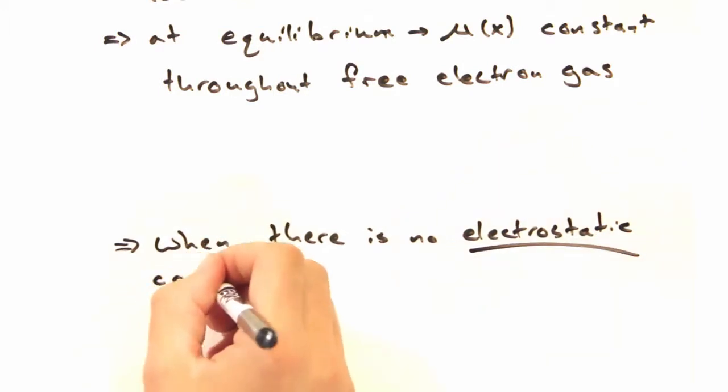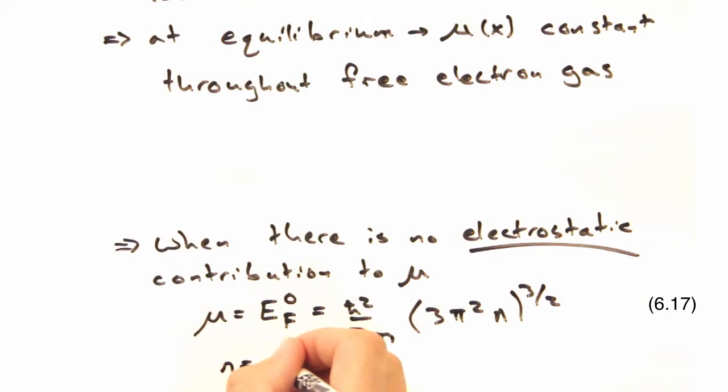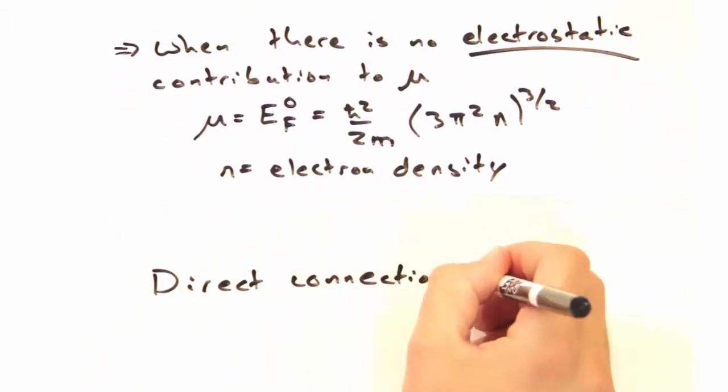Finally, we know that when there's no electrostatic contribution to the chemical potential, the chemical potential can be approximated as the Fermi level, which we can connect to the electron density, n.